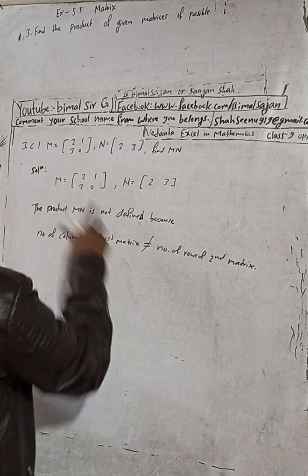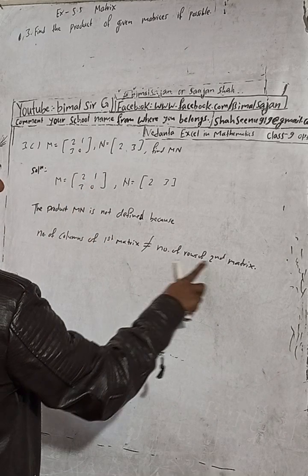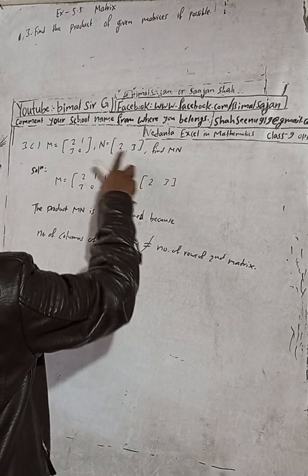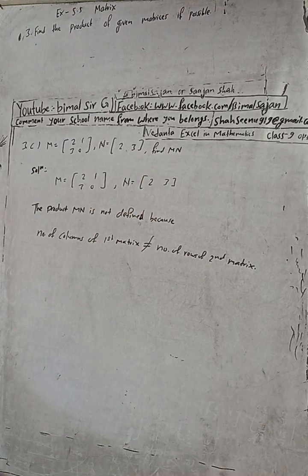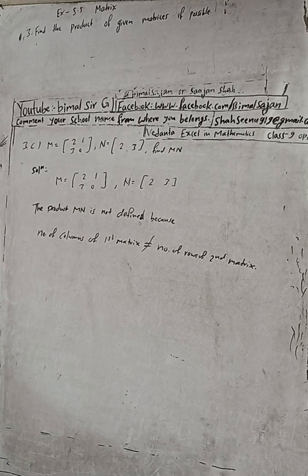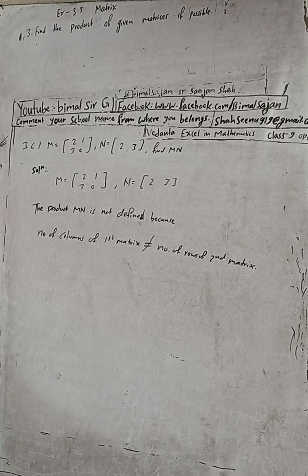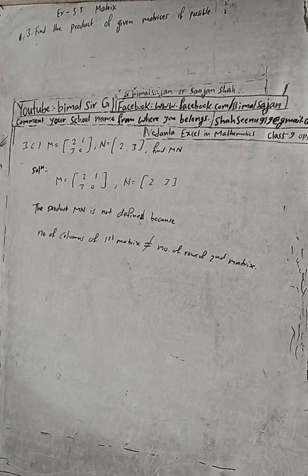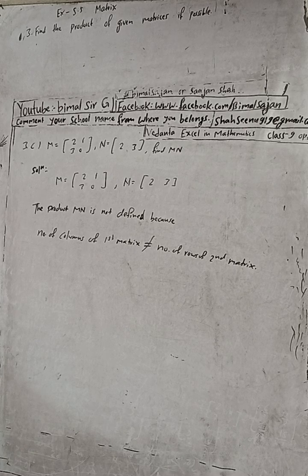The first matrix has 2 columns, and the second matrix has only 1 row, so it is not possible. If the number of columns of the first matrix is equal to the number of rows of the second matrix, then only the product is possible.